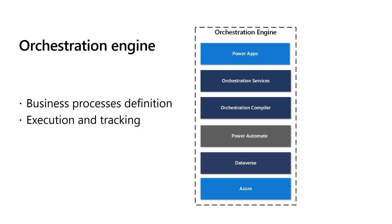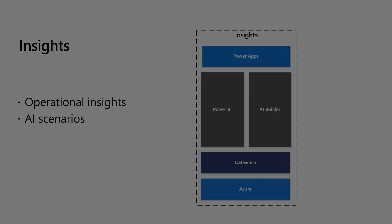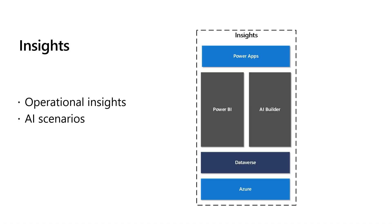The orchestration engine provides the framework to visualize the integrations between systems and the overall flow of the order. Events through the data integration providers and the policy framework allow the flow designer to build conditions on how the order is handled. In this preview release, there are two types of flows: the sales orders and the inventory flows. The goal is to abstract the business process from the complexity of the integration, and the orchestration services utilize a compiler to convert the flow into a Power Automate, which is the engine for the orchestration.